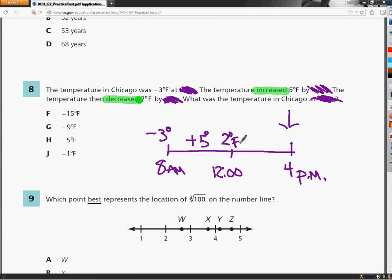Then it decreased, so minus 7 degrees. It decreased 7 degrees by the last time that we have to worry about. So I did negative 3 plus 5 gives me 2. And after I use them, I'm just going to mark them out.